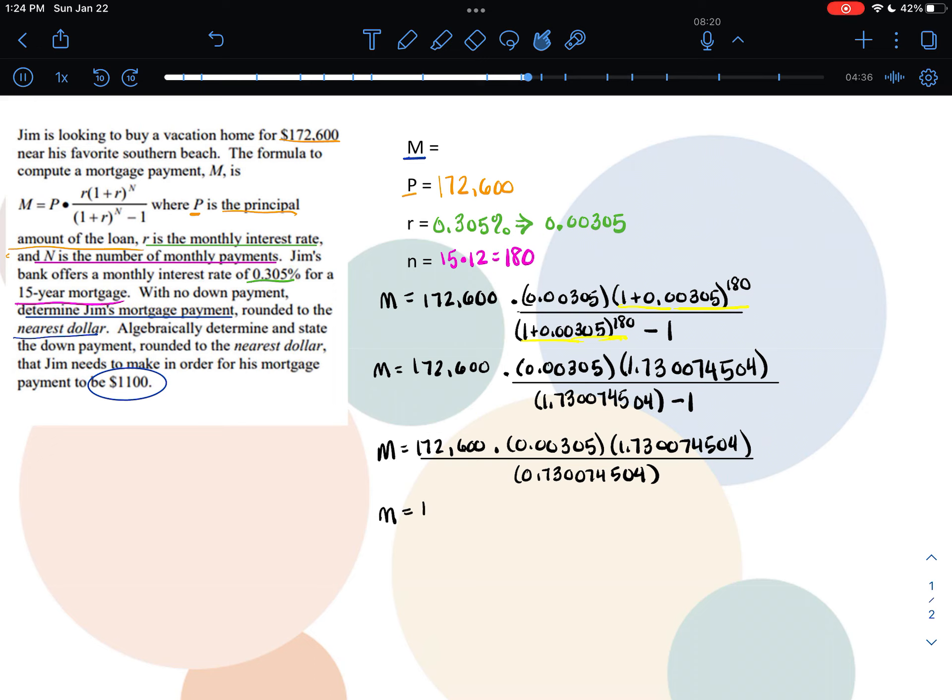When I do the multiplication and then the division, I end up getting an answer of $1,247.49 and some change behind that. That actually does solve my first part of the problem, which was to determine Jim's monthly payment. I just need to round it to the nearest dollar. Rounding that answer to the nearest dollar gives me $1,247.